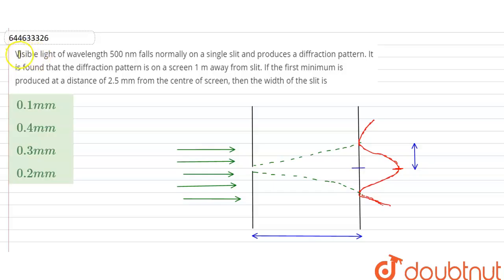Hello students, welcome to Doubtnet. Our question is: visible light of wavelength 500 nanometers falls normally on a single slit and produces a diffraction pattern.